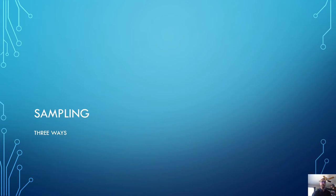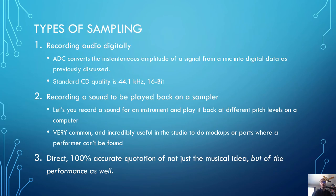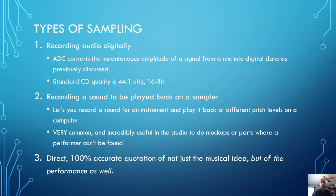Let's look at sampling in more depth. There are three main types of sampling. First, recording audio digitally, where the analog-to-digital converter converts the instantaneous amplitude of a signal into digital data. The second way is to record a sound to be played back on a sampler — letting you record a sound from any instrument and play it back at different pitch levels on a computer or hardware sampler. This is extremely common for mock-ups or parts where a performer can't be found. The third type is direct, 100% accurate quotation of not just the musical idea, but of the performance of that idea as well.